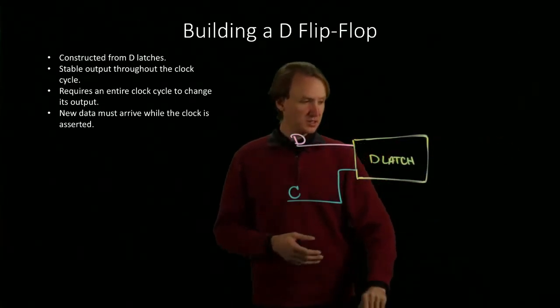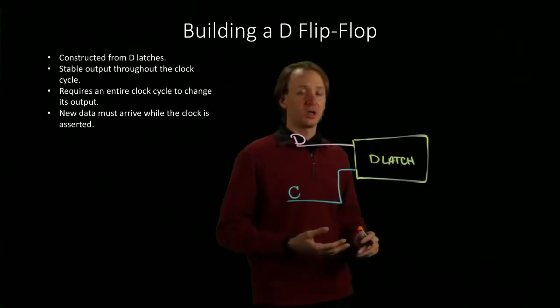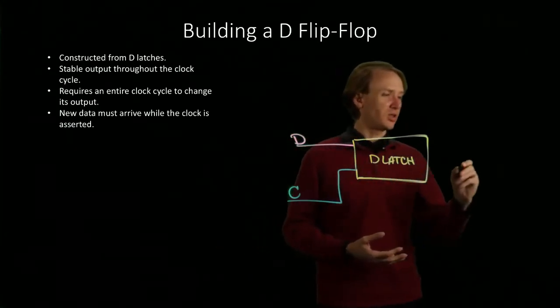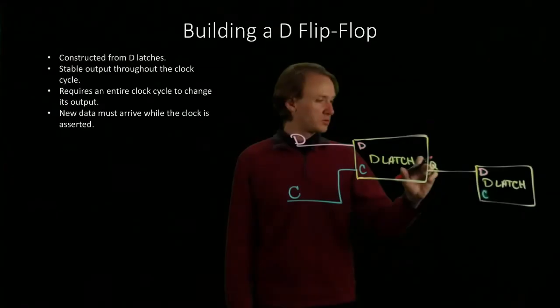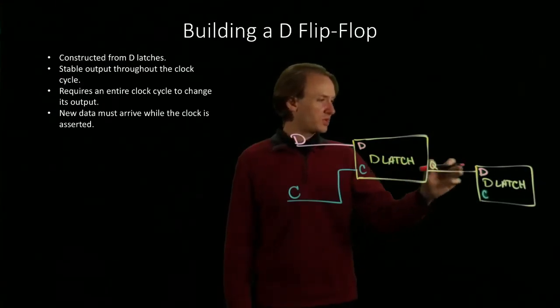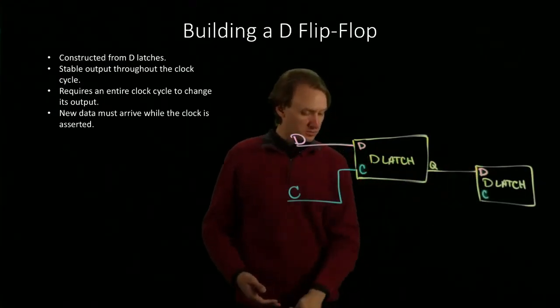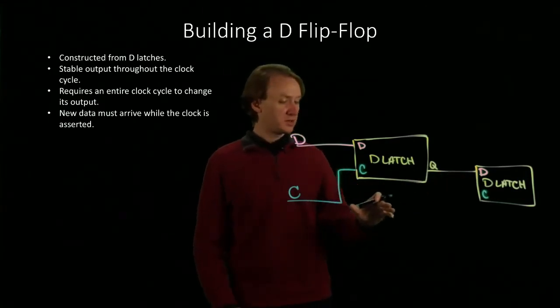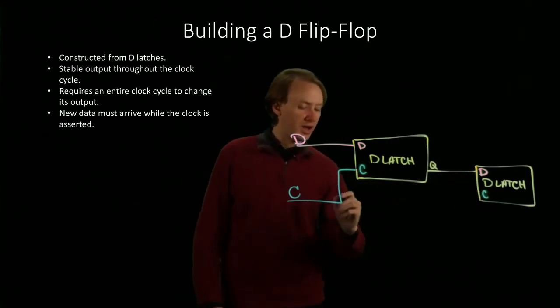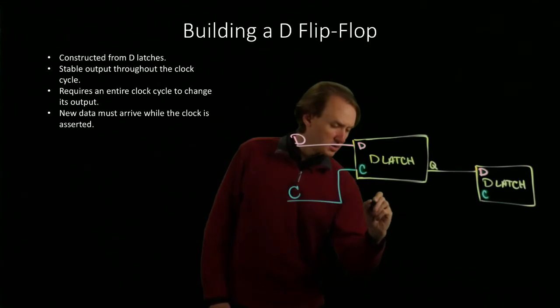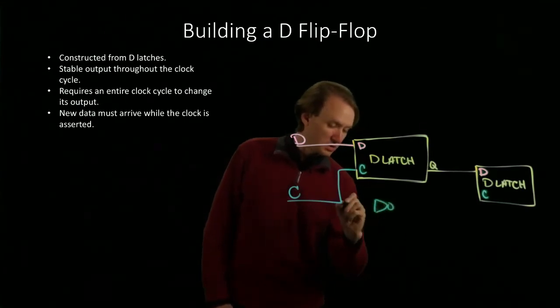So we're going to take the results of our D latch and we're actually going to pass them to a second D latch. The result from our first latch will become the data for our second D latch. But instead of sending the same clock signal to our second D latch, we will send the negation of that clock signal.